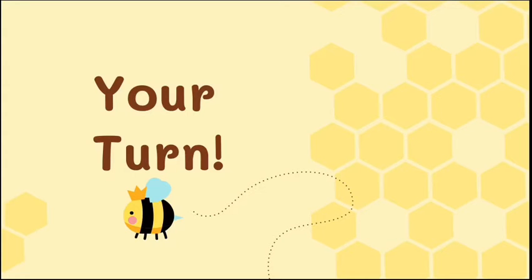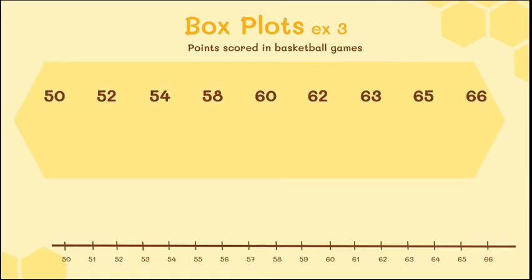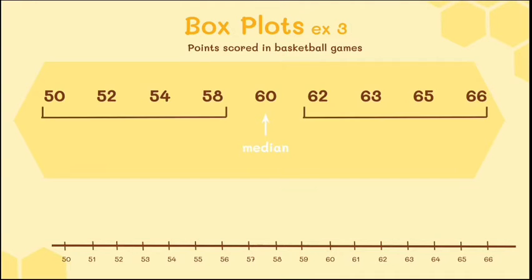Now you can try this example — points scored in a basketball game. A number line is provided, but feel free to draw your own. Pause this video and we'll go over it when you come back. There are nine numbers in this set, so the fifth number is the median, which is 60. That divides the data into two sections of four numbers below and four numbers above.